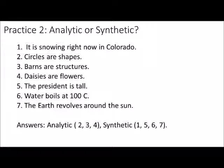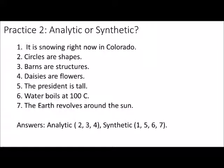Let's do practice — identify these as analytic or synthetic. Number one: 'It's snowing right now in Colorado' — that's synthetic; you have to look out at the world to see if that's true. Number two: 'Circles are shapes' — that's analytic. Number three: 'Barns are structures' — the predicate 'structures' is contained in the subject 'barns,' so analytic. Number four: 'Daisies are flowers' — 'flowers' is contained in 'daisies,' so analytic.